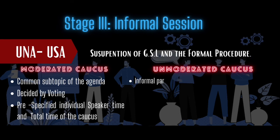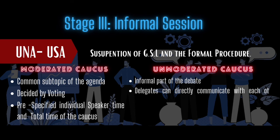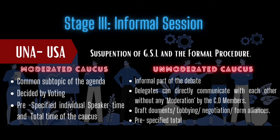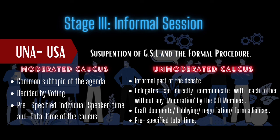Under the Unmoderated Caucus, delegates vote to suspend formal debate and lobby. This is the most informal part of the conference where delegates can directly communicate, draft documents, form alliances, and negotiate. An Unmoderated Caucus is restricted to a total time limit but not an individual speaker time. Importantly, the total time in a Moderated Caucus must be perfectly divisible by the individual speaker time. For example, 20 minutes total with 60-second individual time gives 20 speakers; but 5 minutes total with 90-second individual time yields 3.33 speakers, making the motion redundant.